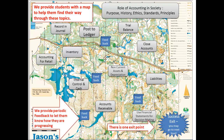Let's look at how those things come together. We've got those topics, and we give students a map to help them find their way through the topics. They start out with the role of accounting, then work their way back to the beginning of the accounting cycle — how we record a journal, how we post it to the ledger, the path through to the trial balance, through to how we close the accounts. Then we look at accounting for retail, which is a lot about inventory. Along the way, there are also a number of opportunities for feedback, particularly related to the assignment and quizzes.